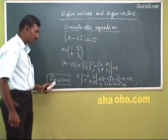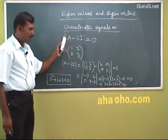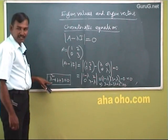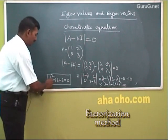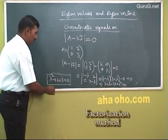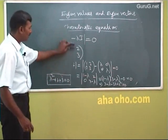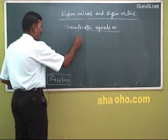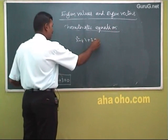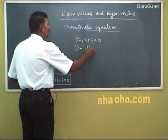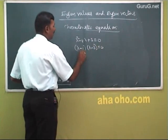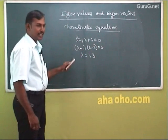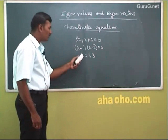The solutions of the characteristic equation are called eigenvalues. Factorizing λ² − 4λ + 3 = 0 gives (λ−1)(λ−3) = 0, so λ = 1 and λ = 3. These two are the eigenvalues of the given matrix. A matrix of order 2 gives 2 eigenvalues; a matrix of order 3 gives 3 eigenvalues.